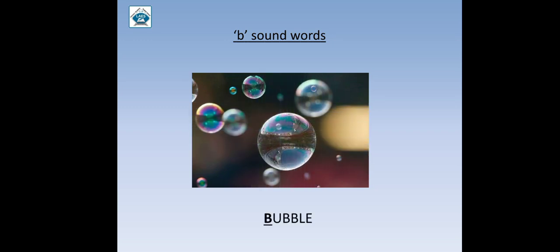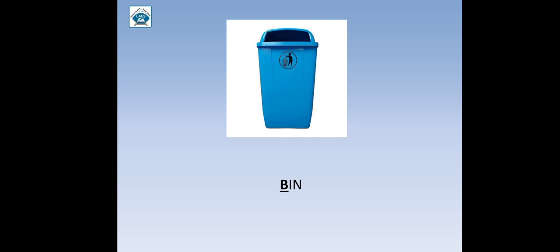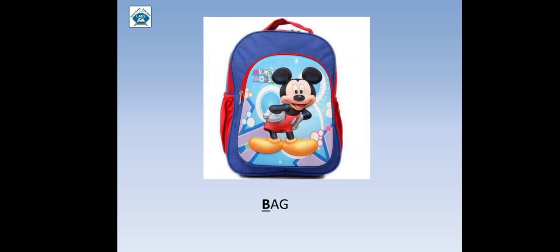Toh yahaan aapko kya dikh raha hai? Yes — bubble! Toh bubble ka sound kahaan se aata hai? B — B sound karta hai, toh vo B sound word hua. Ek bubble. Aur kaun se words hain jo B se sound karte hain? Chalo dekhte hain — bin. So the words that sound from B is 'bin'. Jaise we can observe in this picture — ek dustbin hai hamare saamne jo hum dekh sakte hain. Toh the dustbin also sounds from the letter B, that is 'bin'. What is another word that sounds from B? Correct — bag! So you can observe a bag — Mickey Mouse bag. Toh jo bag hai uska bhi sound B se hota hai. Toh yeh B sound words the.